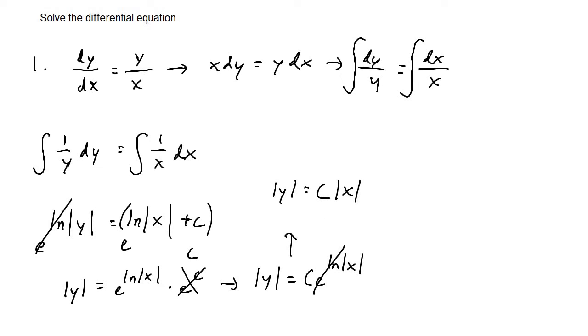The e to the ln cancels, leaving us with |y| equals c times |x|. We can just get rid of the absolute values on both sides. So y equals the constant c times x, and that is going to be the solution to the differential equation.